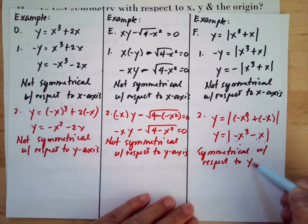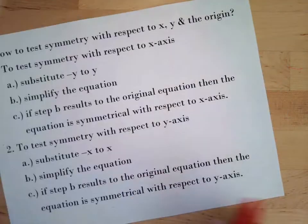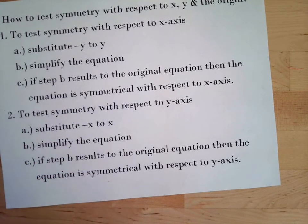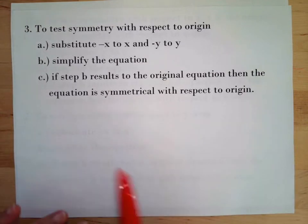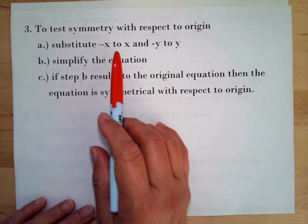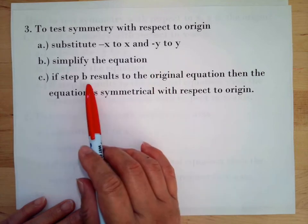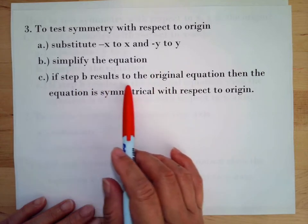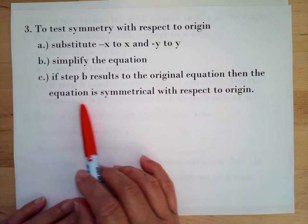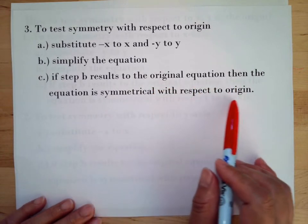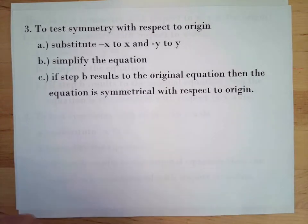Now we check symmetry with respect to the origin. To do this, substitute negative x for x and negative y for y, then simplify the equation. If the result equals the original equation, then the equation is symmetrical with respect to the origin.